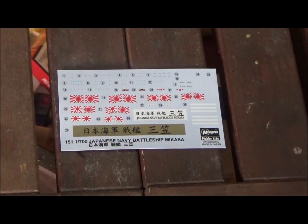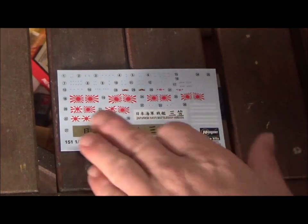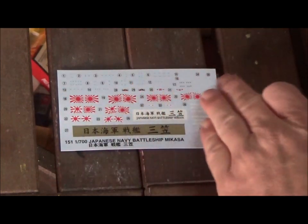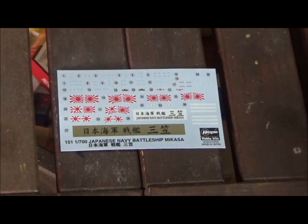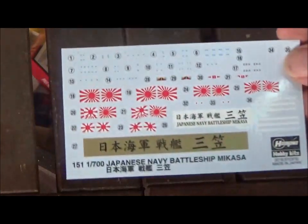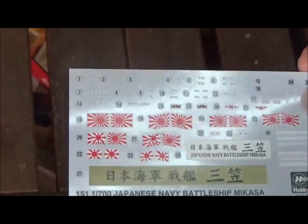So here's our decal sheet for the ship. You can see well here's the name plate twice, all the flags and there's a couple little smaller details and some stripes here. It's not much but they look good for what they are. The colors look really good I think.